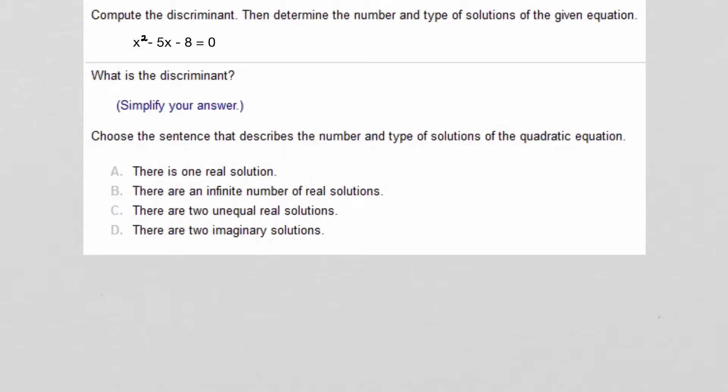Now here is basically the template from my math lab. This is what the problems will look like when you're computing the discriminant. So it says compute the discriminant, determine the number and type of solutions of the given equation. I like to, when I'm working with the quadratic equation, a quadratic equation or the quadratic formula, I like to write out a, which is 1, b, and c, which is negative 5.